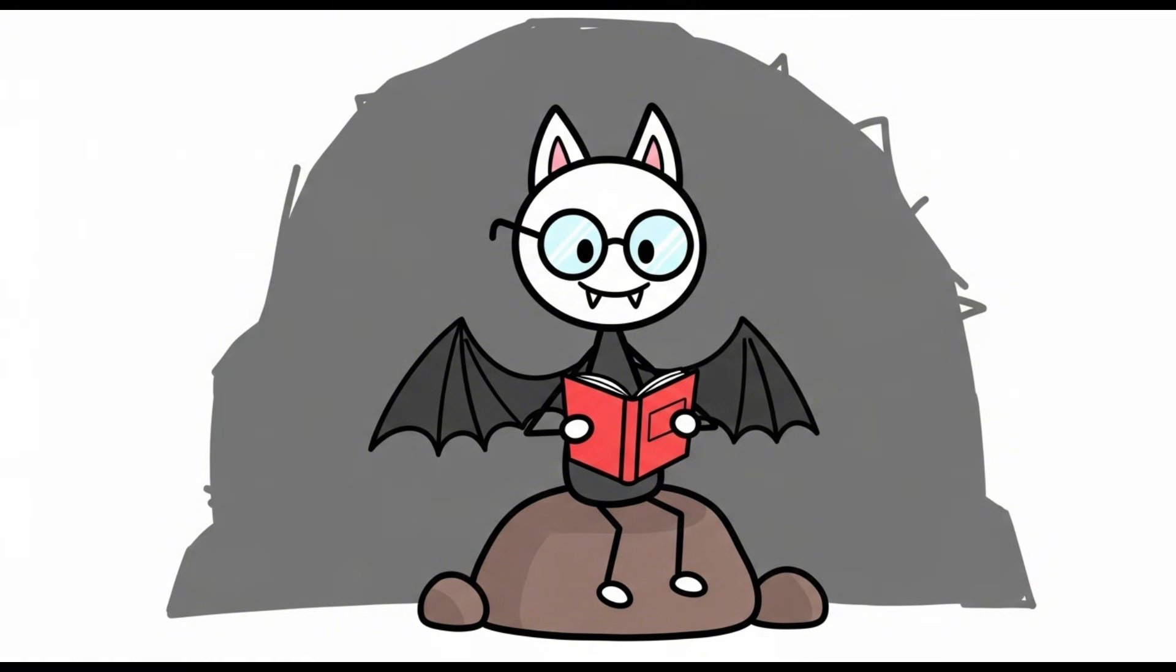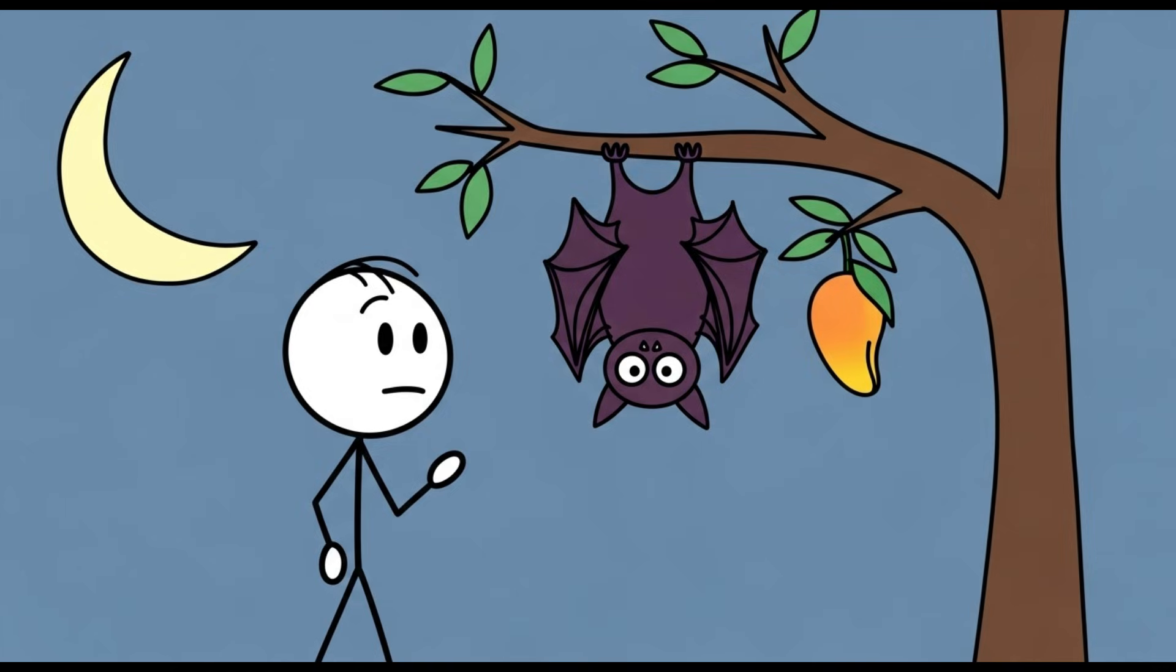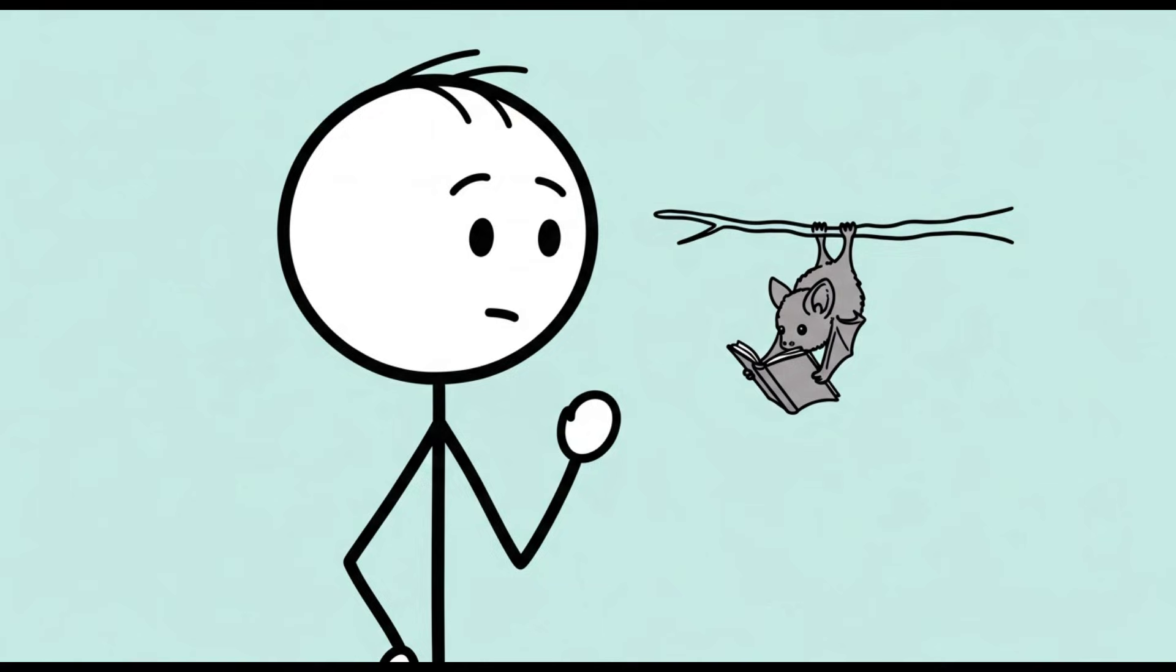Not a single one of the over 1,400 species of bat is blind. Not one. In fact, some of them can see better than you can, especially the large fruit bats, also known as megabats, which have big, well-developed eyes perfect for spotting a tasty mango in the moonlight.